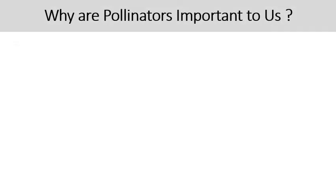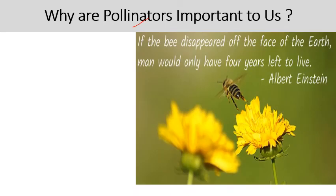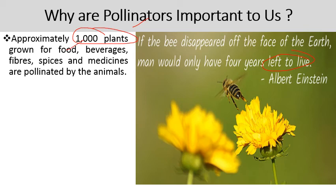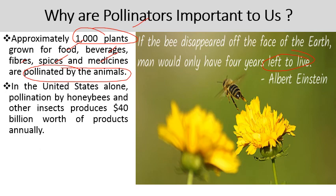Why are pollinators important to us? Pollinators play a very important role — they pollinate approximately 1,000 plants used for food, fibers, and source of oils. There was one saying by Albert Einstein: 'If the bee disappeared off the face of the earth, man would only have four years left to live.' There are approximately 1,000 plants grown for food, beverages, fibers, spices, and medicines which are pollinated by animals. In the United States alone, pollination by honeybees and other insects produces $40 billion worth of products annually.